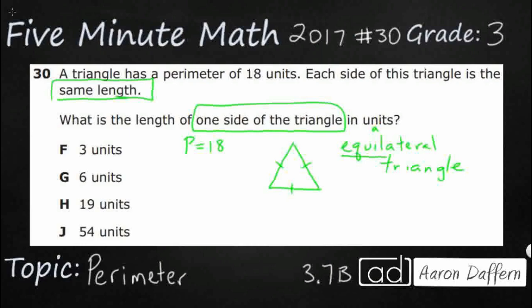And so what is perimeter? Well, perimeter is 18, but perimeter for a triangle is side plus the side plus the side. So we've got three sides, and they're all the same.